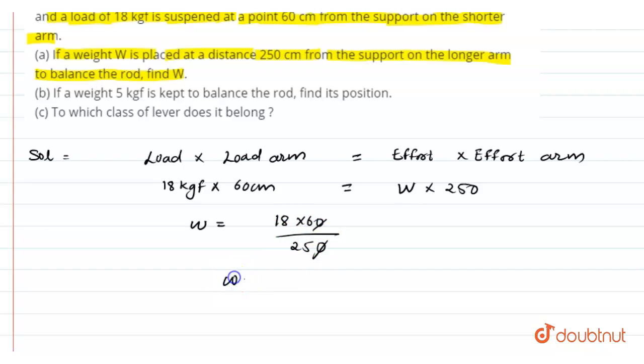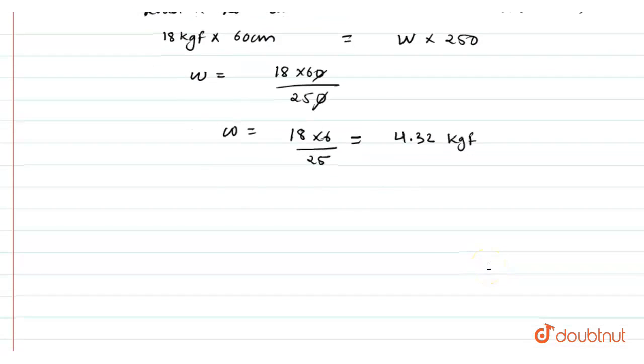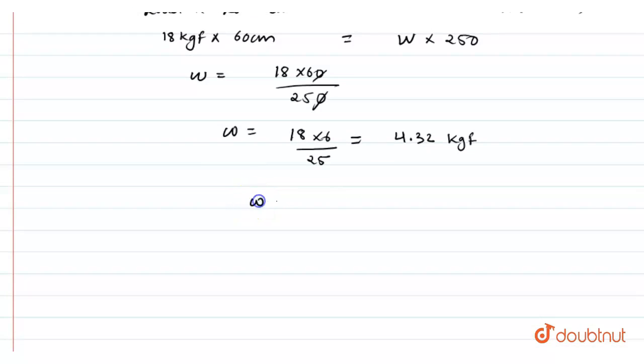We will get w equals 18 into 6 divided by 25, which equals 4.32 kgf. So our effort w comes to be 4.32 kgf.